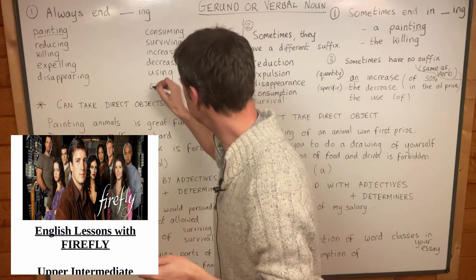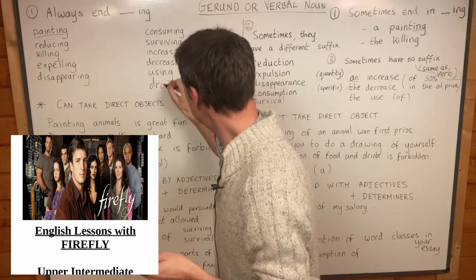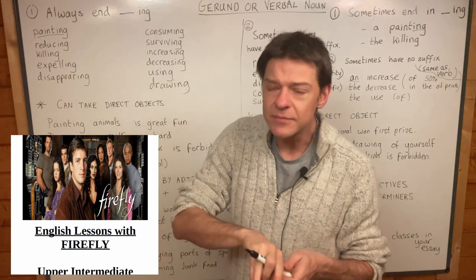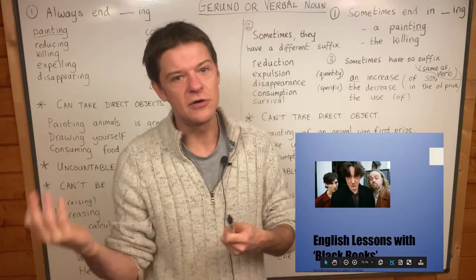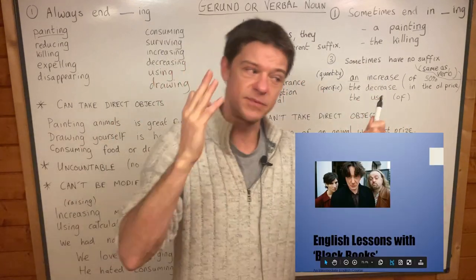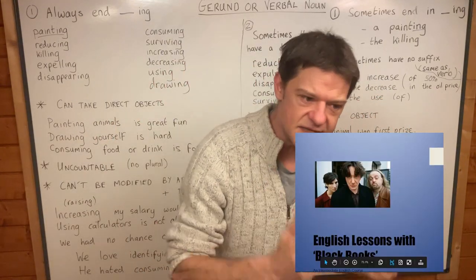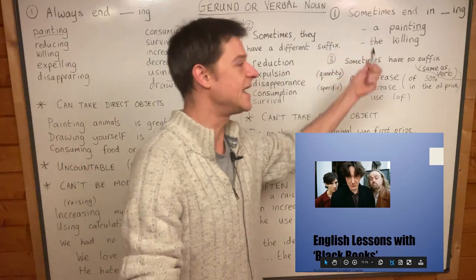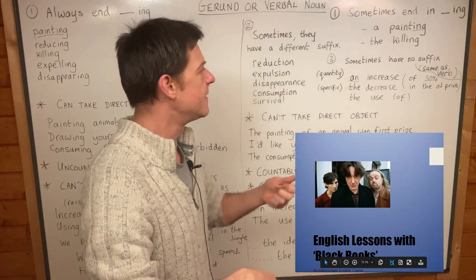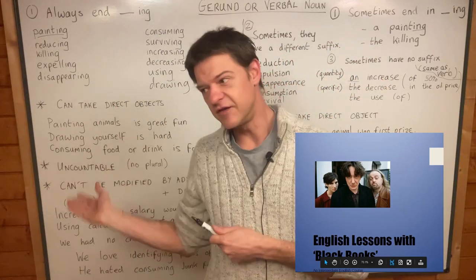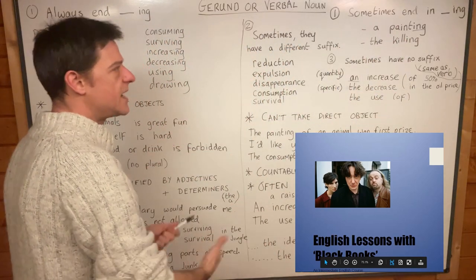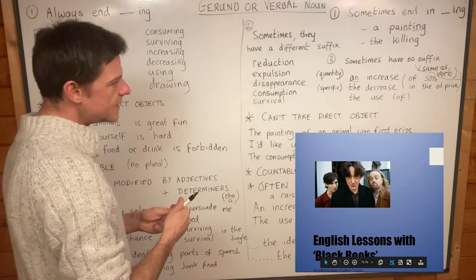And I can see I haven't written drawing over here, but drawing is certainly over here as well. Sometimes the gerund and the verbal noun look identical, but they are different because drawing is an activity and a drawing is something you make. Painting is an activity and a painting is something you create.